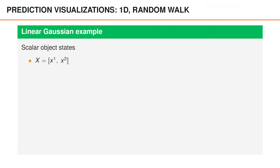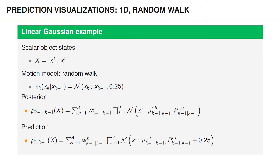We can visualize the predicted density using a linear Gaussian example, where we have scalar object states. To make the visualization simple, we have just two objects, and the motion model for each object is a random walk with variance 0.25. The posterior is a Gaussian mixture with four mixture components, and given that we have a random walk motion model, the predicted density also has four mixture components. The predicted mixture weights are the same as the posterior weights, the means are the same as the posterior means, and for the variances, we add the process noise variance to the posterior variance.